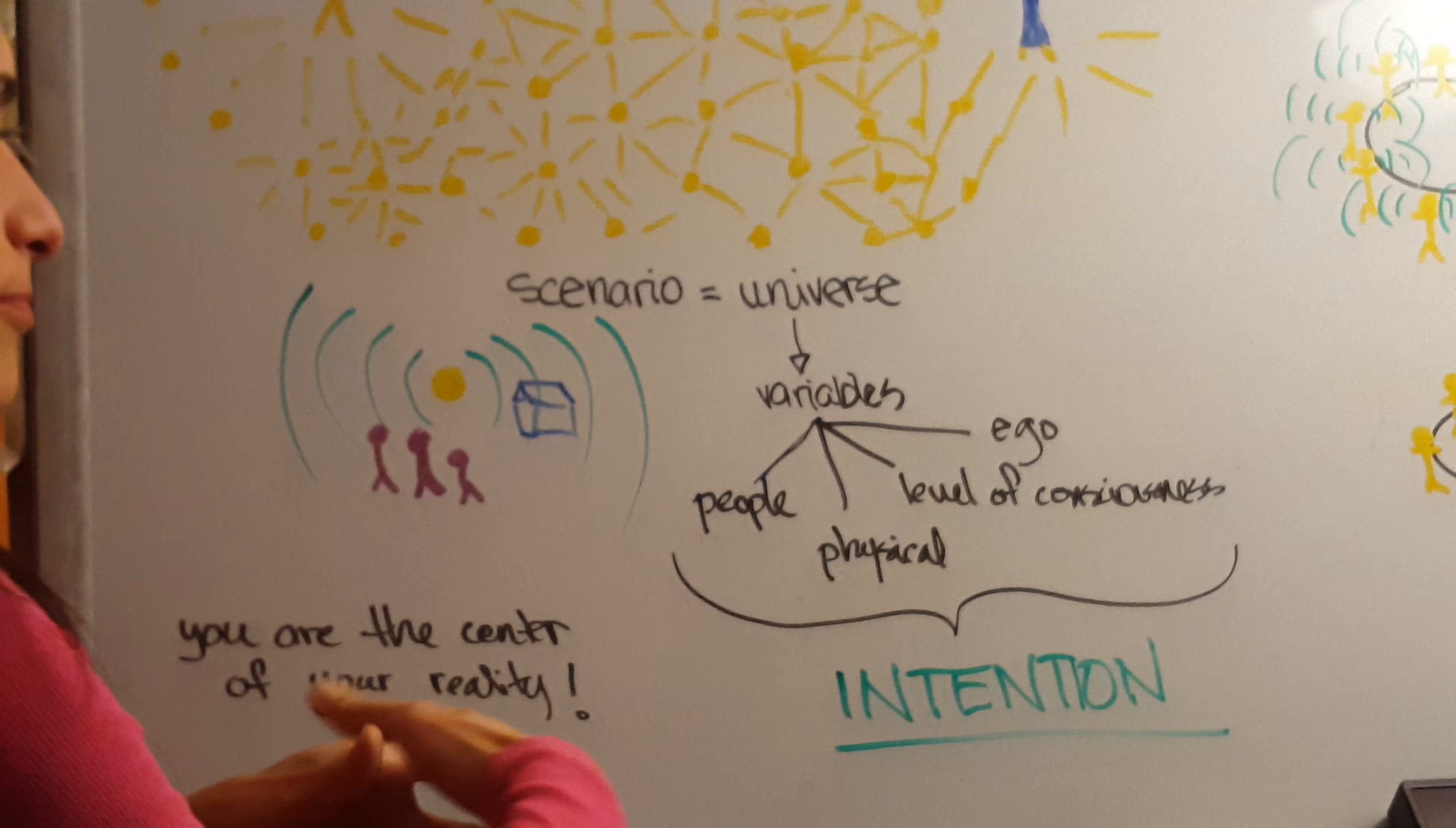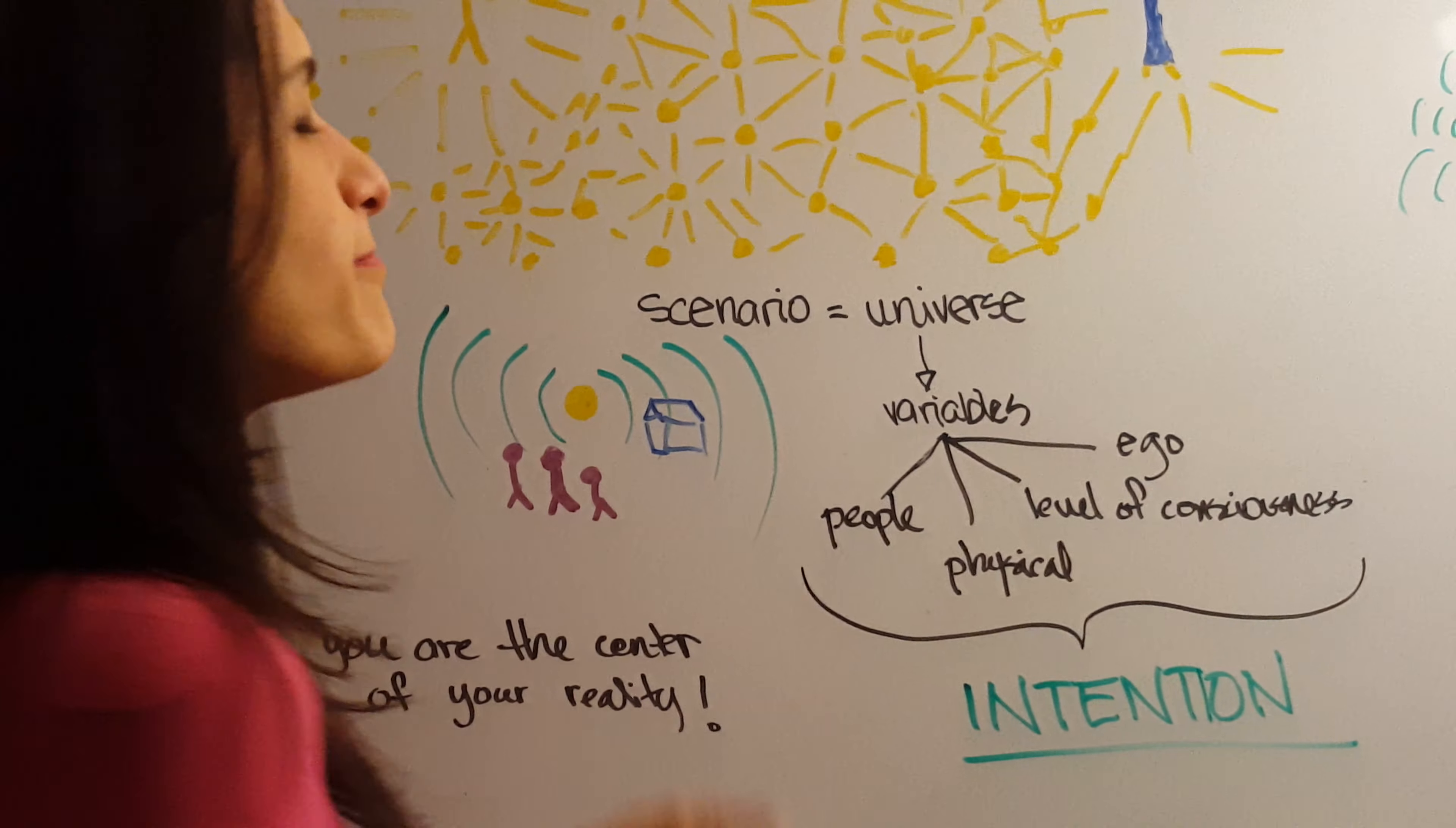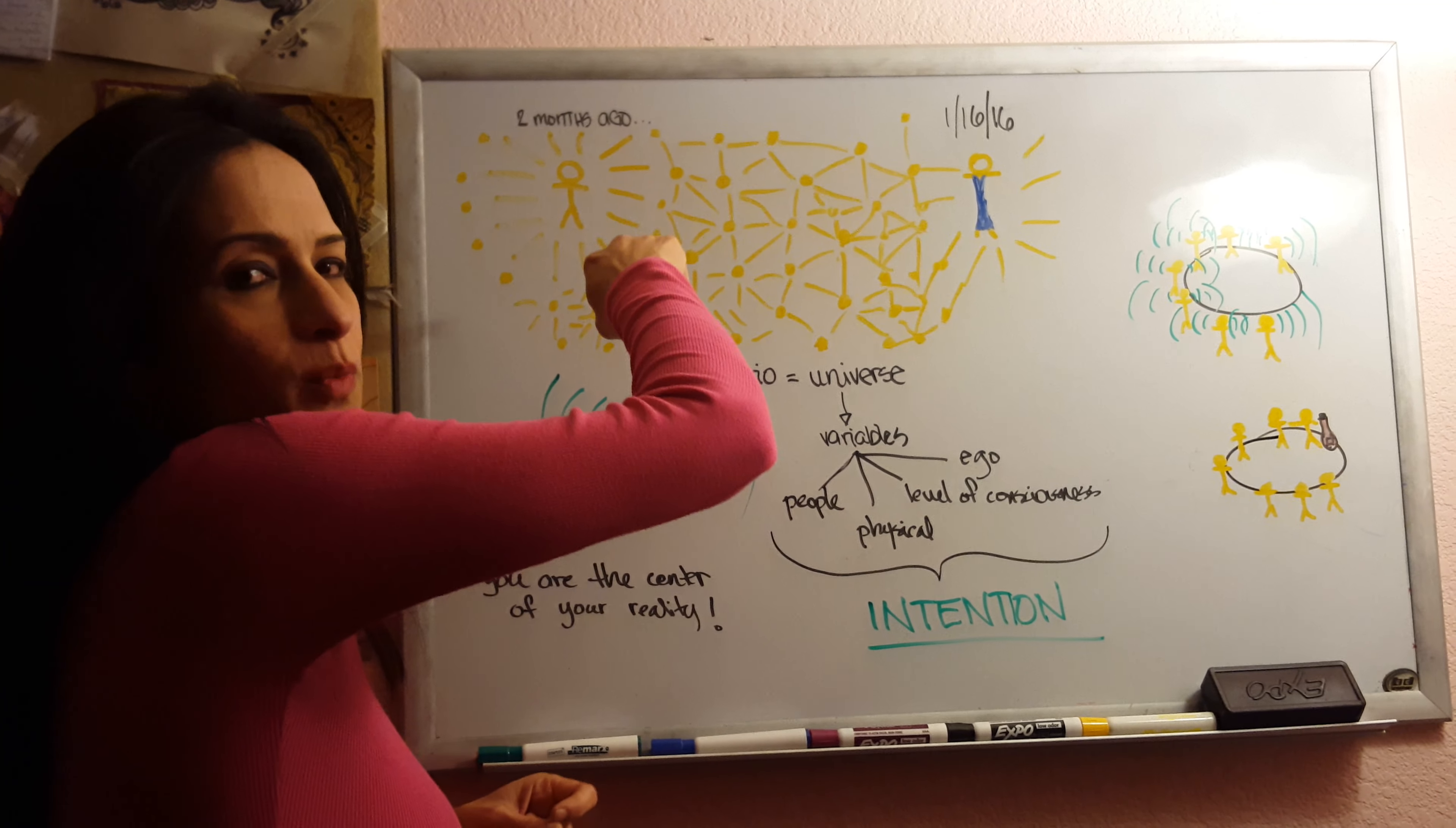So it's made up of the people I'm around, my physical things around me, my house, my car, my level of consciousness, what I'm aware of and my ego, the different battles we face. That's my own universe. So right now I have all these variables that make up my universe right this second, and there's many different possibilities depending on what choice I make.